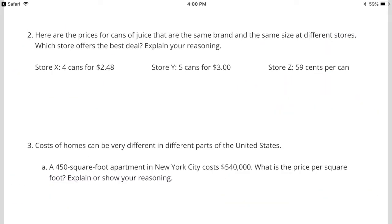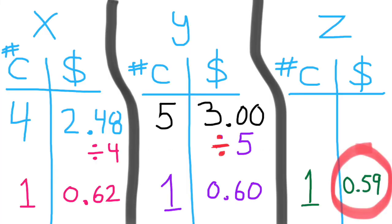Number 2: Here are the prices for cans of juice that are the same brand and the same size at different stores. Which stores offer the best deal? Explain your reasoning. Store X offers 4 cans for $2.48. So I'm going to divide $2.48 by 4.